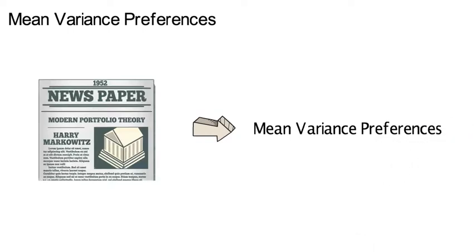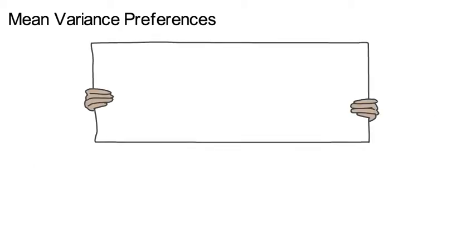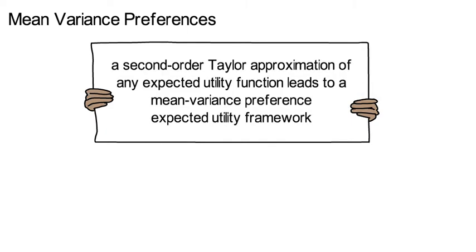Mean variance preferences are a very special class of preferences. In 1979, Markowitz and Levy show in a research paper that a second order Taylor approximation of any expected utility function leads to a mean variance preference expected utility framework.